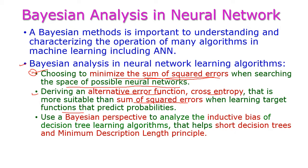The alternative error function and cross entropy are used when learning the target function that predicts probabilities. The third one is the Bayesian perspective to analyze the inductive bias of the decision tree learning algorithm, and this inductive bias is very useful for short decision trees and minimum description length principles.